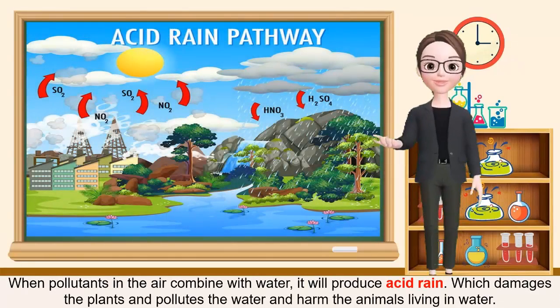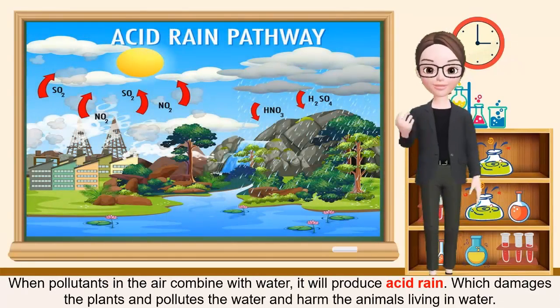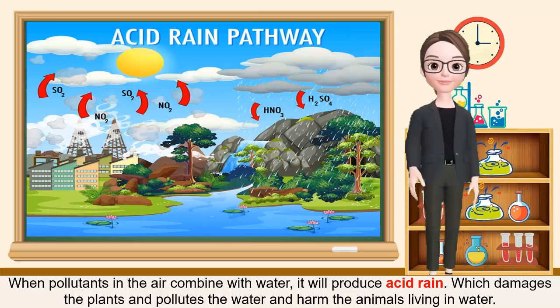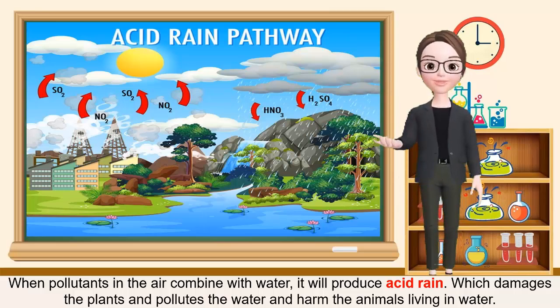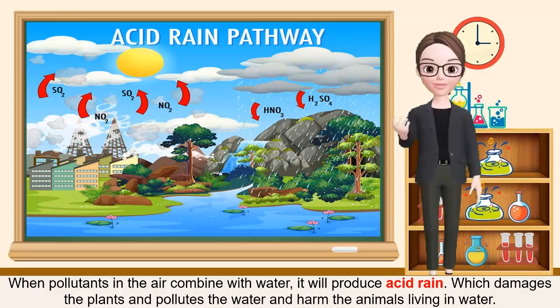When pollutants in the air combine with water, it will produce acid rain, which damages the plants and pollutes the water and harms the animals living in water.